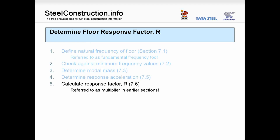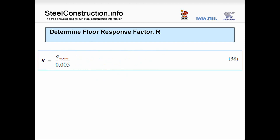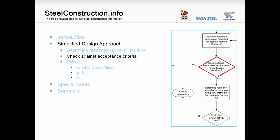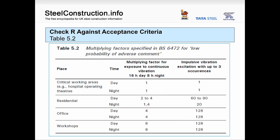Once we've calculated the acceleration, we convert it to a response factor by dividing by the constant 0.005. This allows us to compare the result against the threshold values given in the British Standard BS 6472, which the SCI have also repeated in P354.